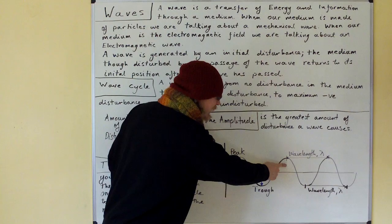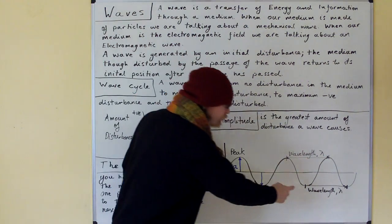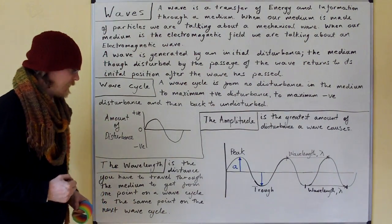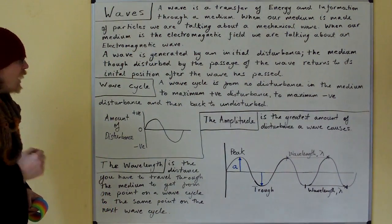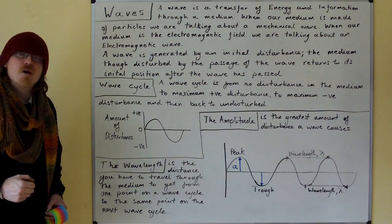So the distance from one peak to the next peak is one wavelength and the distance from one trough to the next trough is one wavelength. The wave cycle is also one wavelength long for that reason.